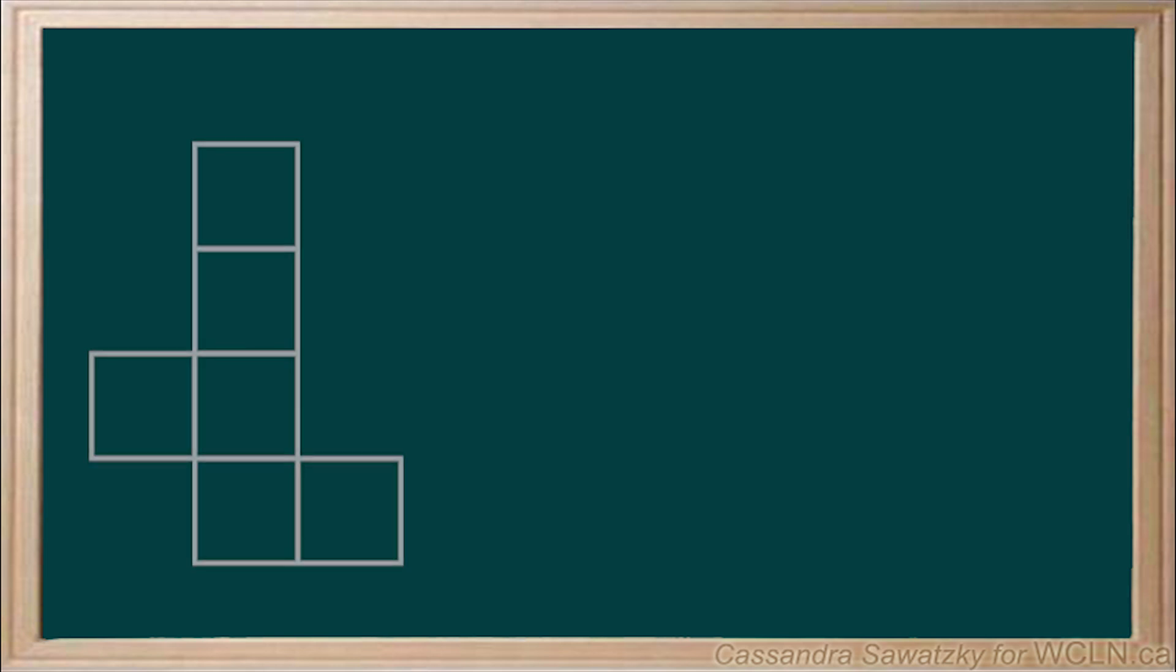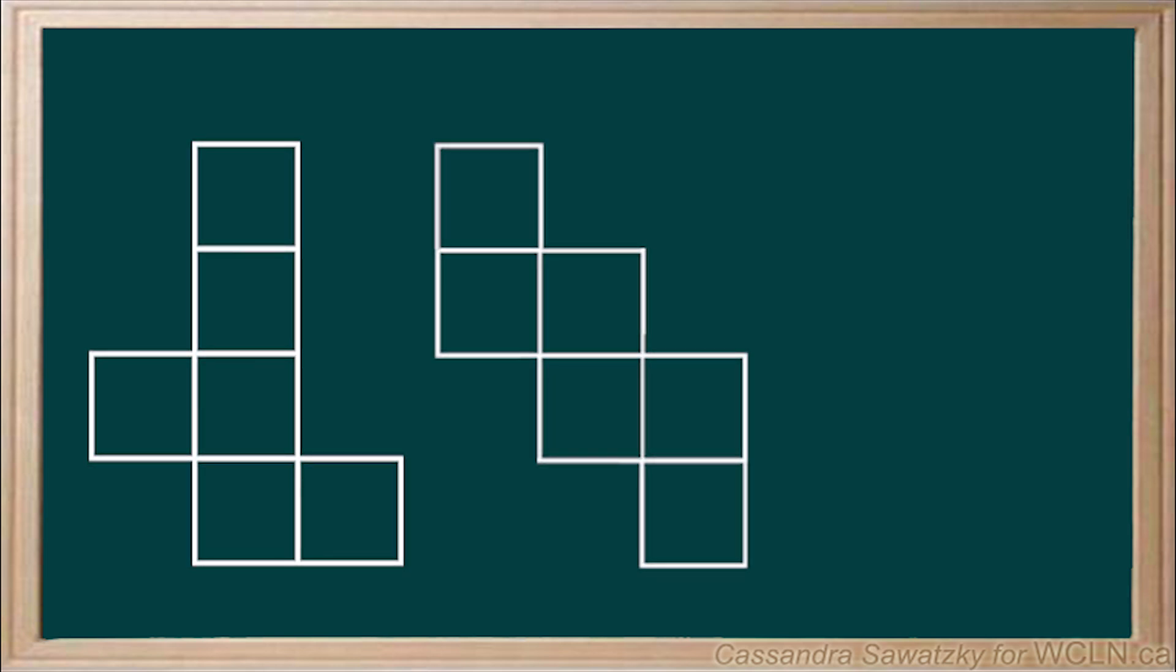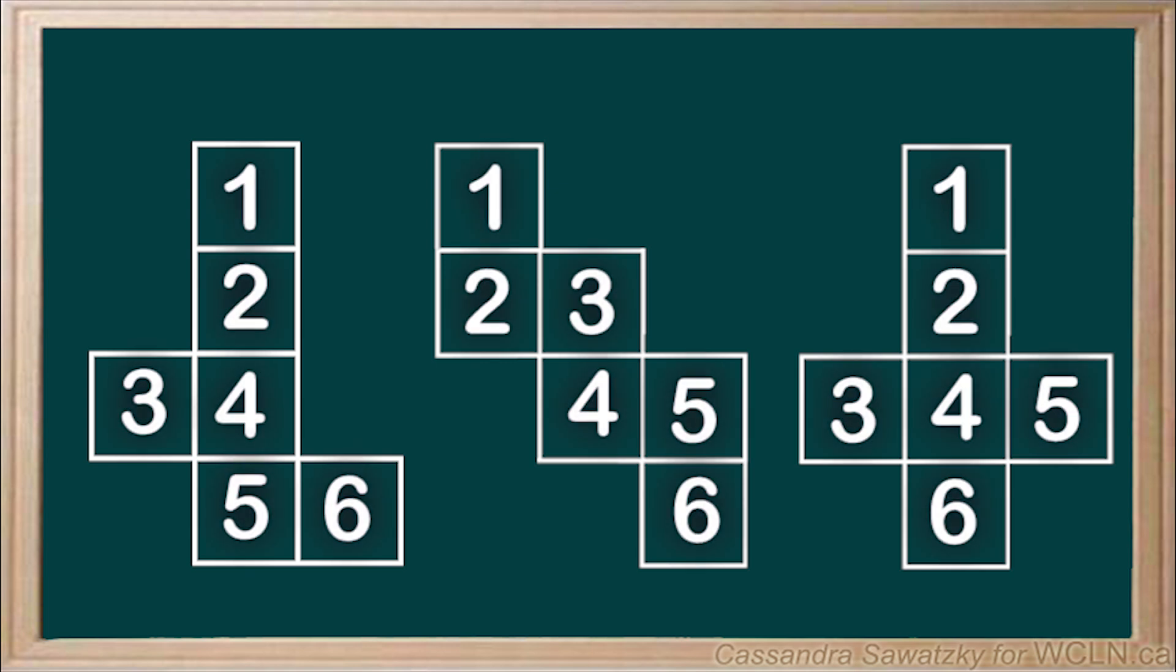There are multiple different possible nets for one shape. Here are some other nets we could have created for our cube. Notice how they all have the same six square faces, just in different arrangements.